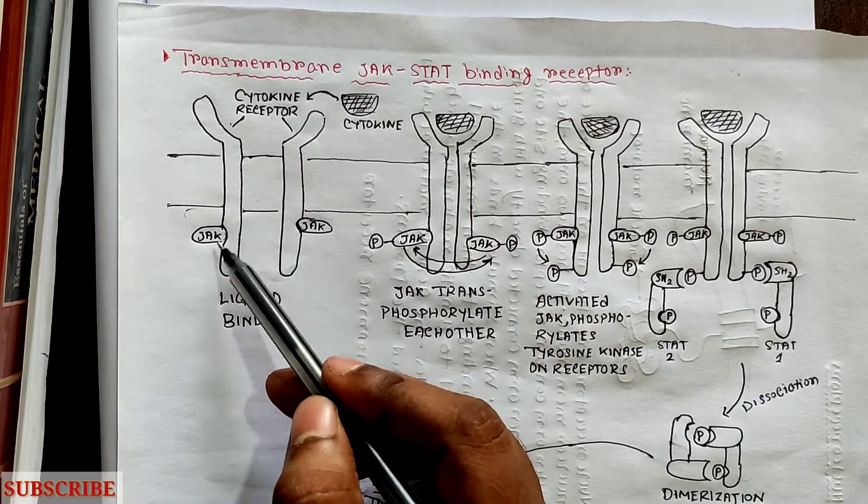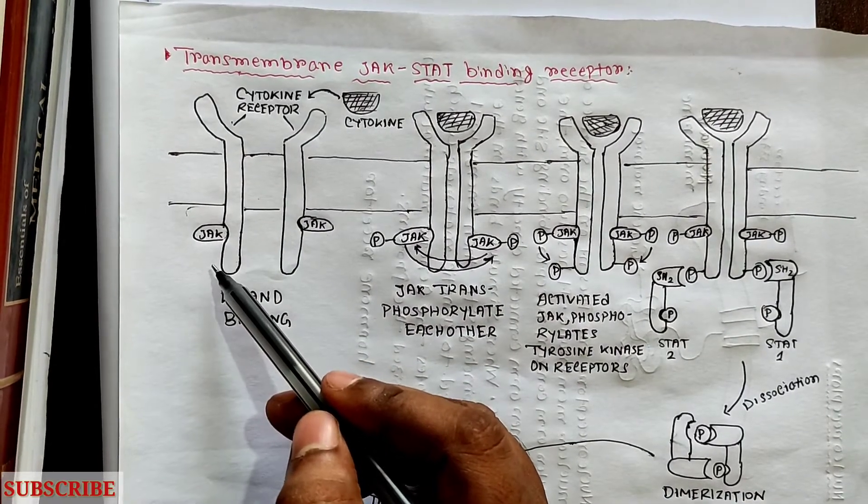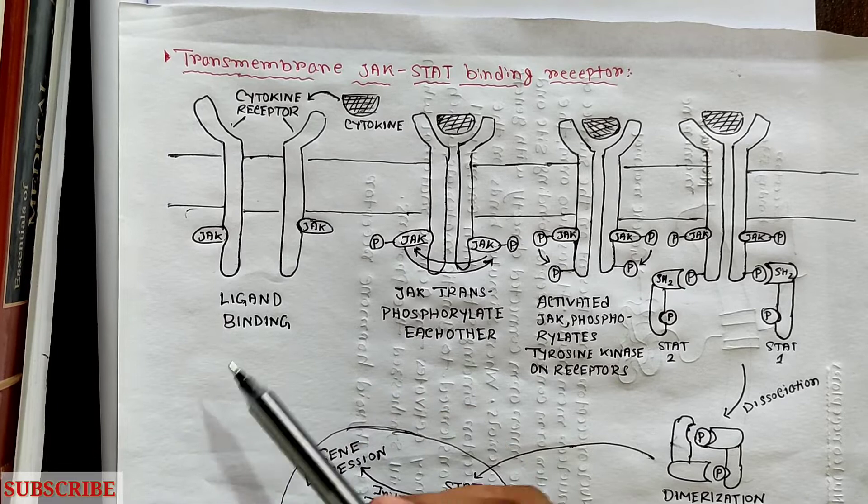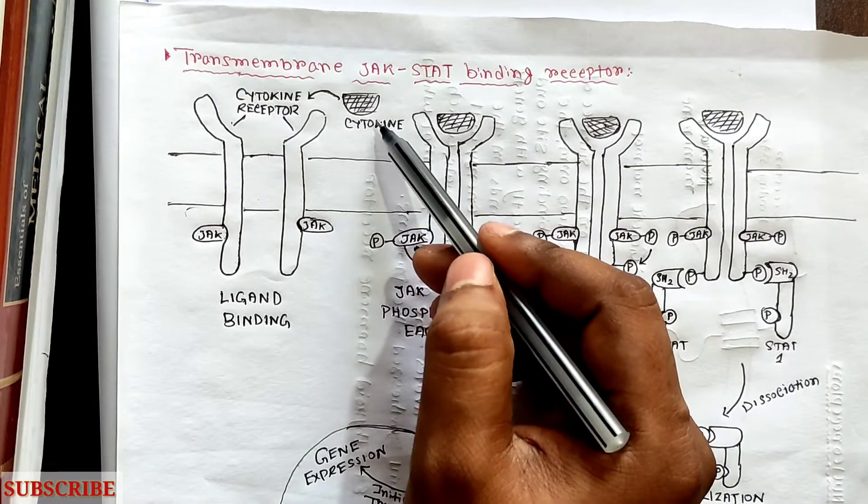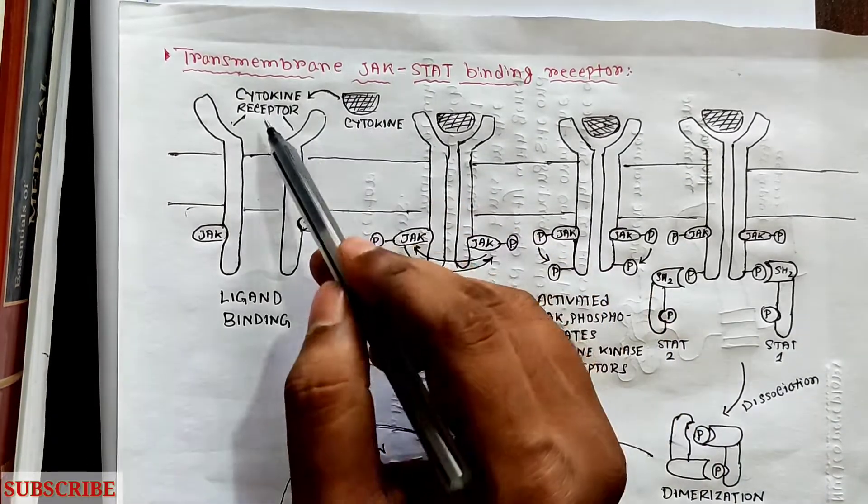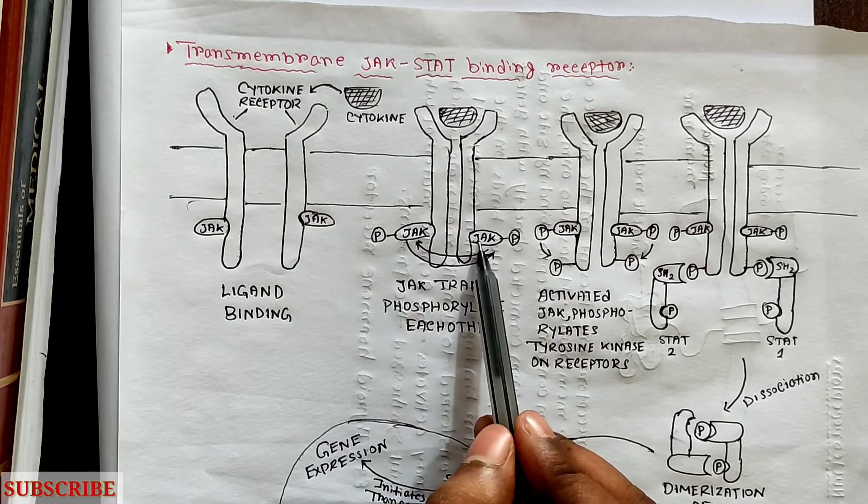The inside is associated with JAK, Janus kinase. When cytokine binds with this receptor, the two JAK comes in close proximity and transphosphorylate each other and increase the activity of tyrosine kinase.